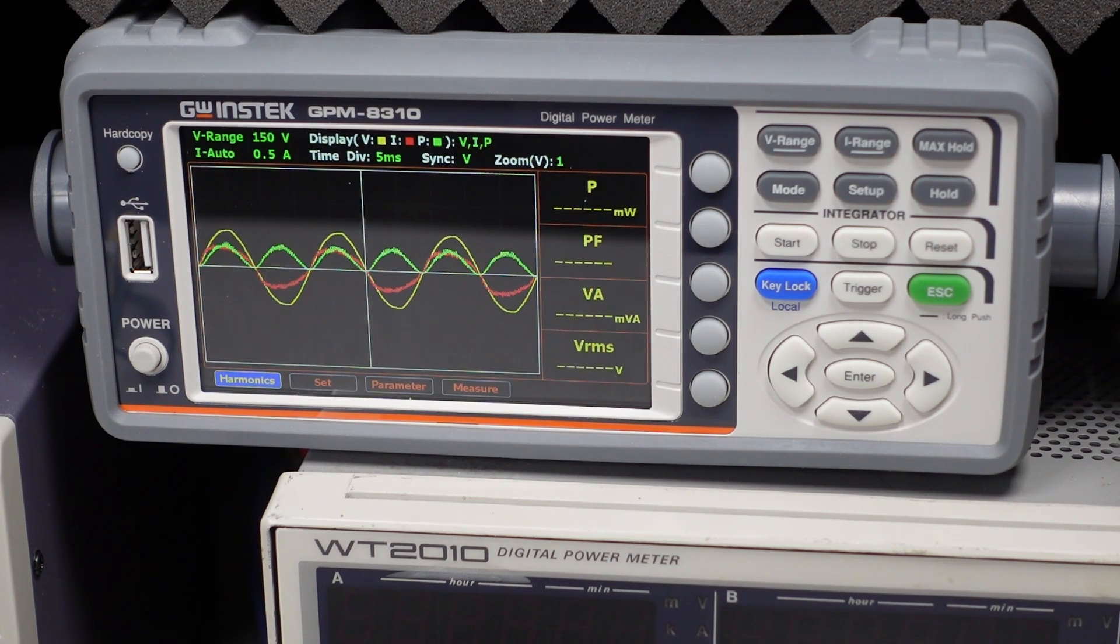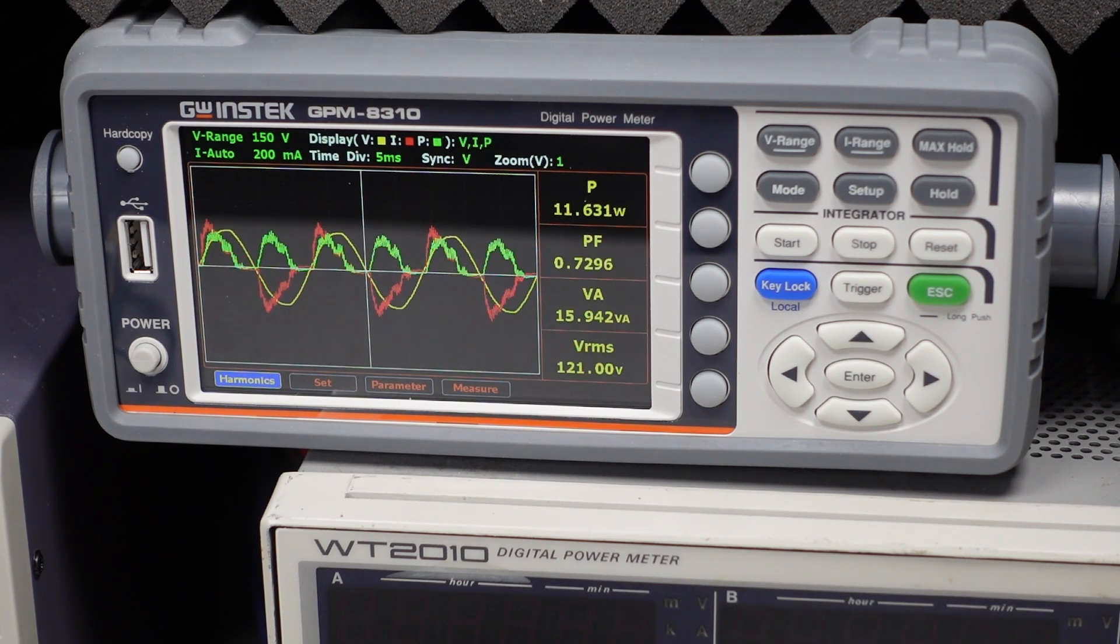Here are some examples of how the graph changes for lower power levels. So 75, 50, 25 watts, and 10 watts. As you can see, it starts to get weird looking, but never as bad as the non-power factor corrected conditions.